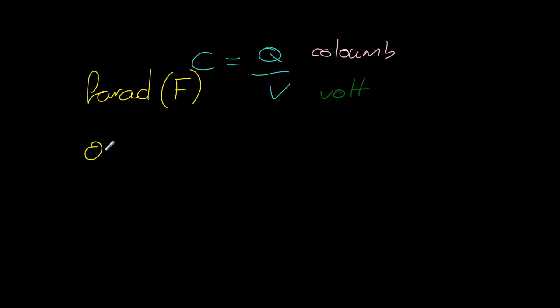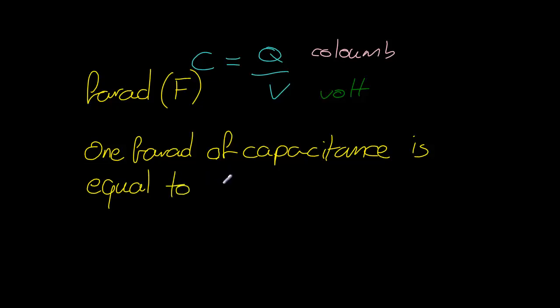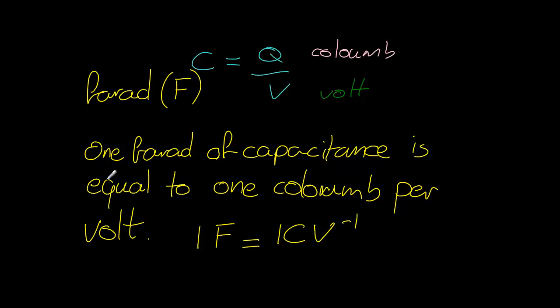So what we can say is that one Farad of capacitance is equal to one Coulomb of charge per volt of potential difference. So 1 F is equal to 1 Coulomb per volt. And there we have the definition of the Farad.